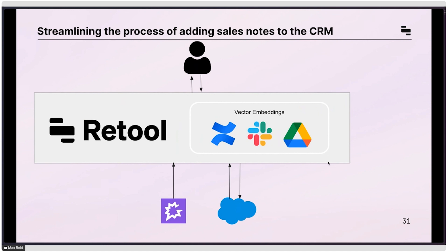And we have these different vector embeddings — specifically information from our Slack, from Google Drive, and from Confluence — around those key areas that we're looking for in Salesforce notes, to programmatically generate BANT: budget, authority, need, and timeline, for the user to then validate and click a button to update that directly in Salesforce. So no longer needing to manually consolidate all this information, but letting Retool AI parse out the key pieces of information, surface it up to the salesperson, and allow them to directly write that back to Salesforce.